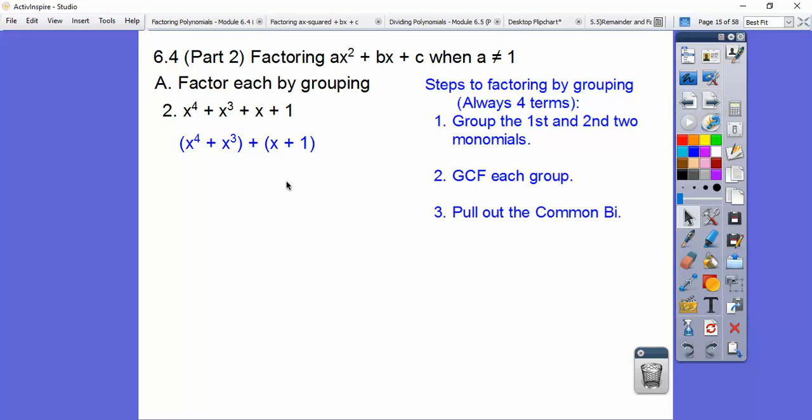And group the first two and the second two together. And then GCF out. I can pull an x³ out of both of these. Again, all I can pull out of those is one. All right, so when we do that, we get that.